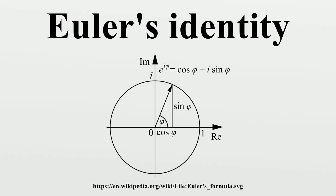Euler's identity is named after the Swiss mathematician Leonhard Euler. It is considered an example of mathematical beauty. Euler's identity is a special case of Euler's formula from complex analysis,